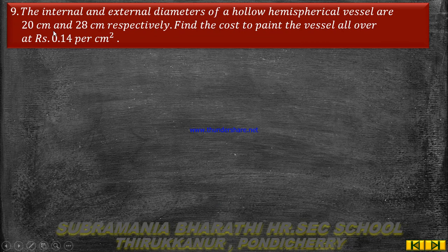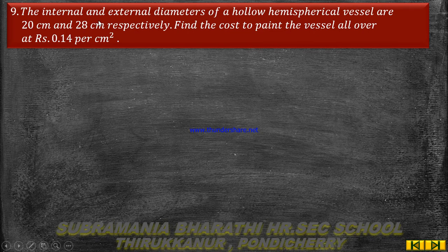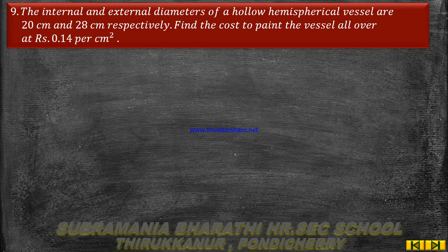Hi students, exercise number 7.1, question 9. The internal and external diameters of a hollow hemispherical vessel are 20 centimeter and 28 centimeter respectively. Find the cost to paint the vessel all over at rupees 0.14 per centimeter square. So we have a hollow hemispherical vessel.